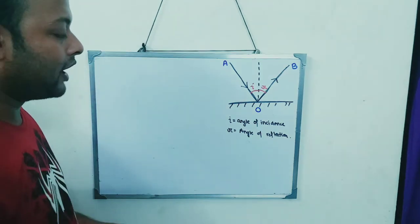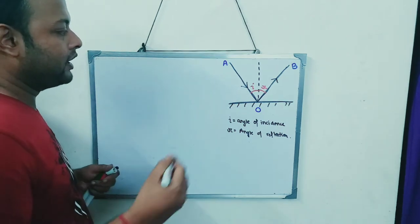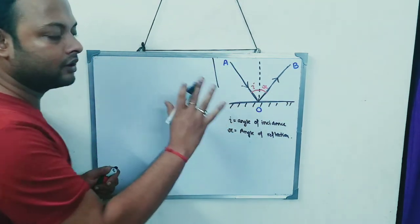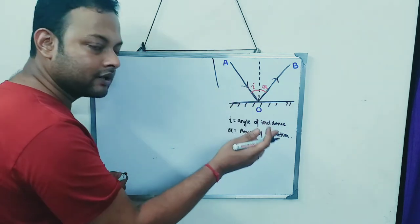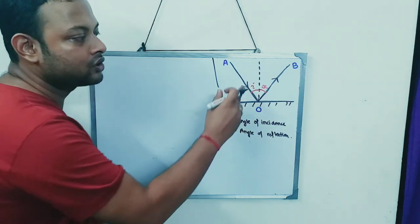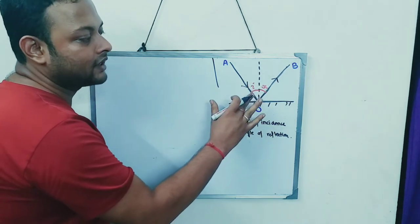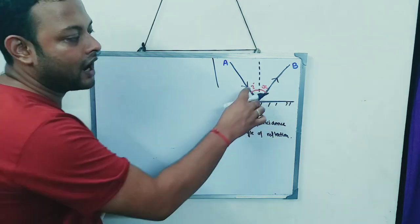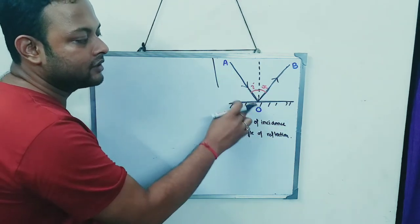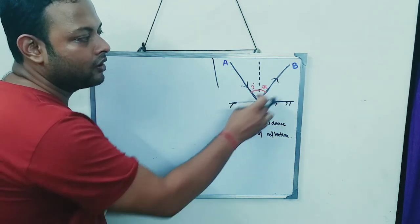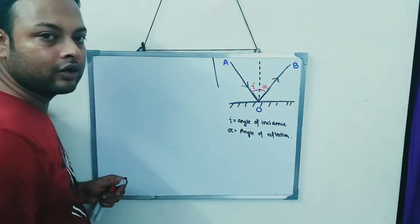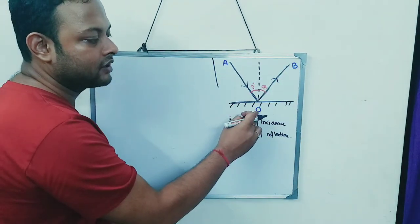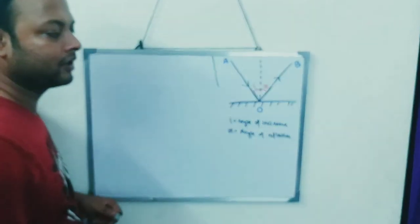After this, using this diagram — which you can also see in the last video — I have drawn the angle of incidence, angle of reflection, the incident ray AO, and reflected ray OB. AO is the incident ray, OB is the reflected ray.